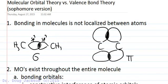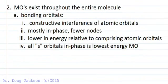Now molecular orbital theory would disagree and say that molecular orbitals exist throughout the entire molecule, not just in between two atoms. We have this concept of bonding and antibonding.